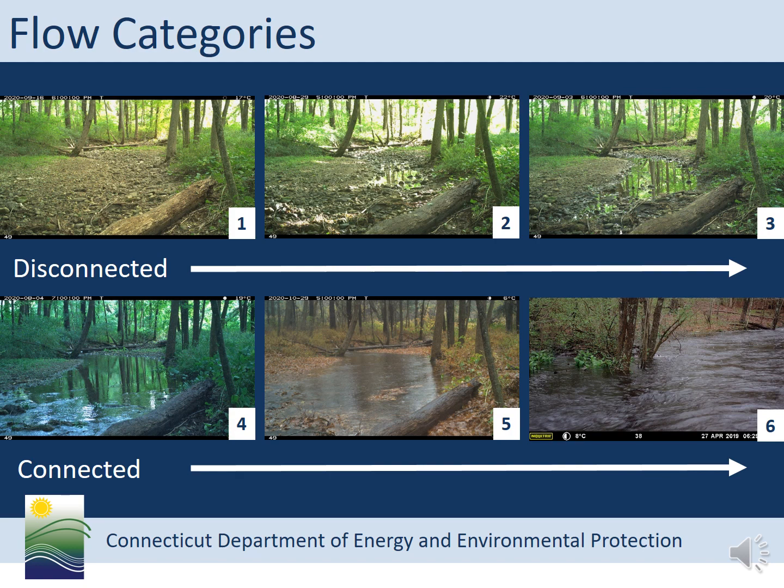We developed a six-category system to describe the variations in stream connectivity observed using trail camera images. Category one is completely dry. Category two has some pools of standing water, but no flow. Category three has minimal flow in which some pools and riffles are disconnected and some habitat types are not accessible. Category four has flows with well-connected pools and riffles. Category five is where the flow fills the stream channel at or just below bankfull discharge. And category six is when flows are above bankfull discharge and into the floodplain. Once we download the pictures from the field, we assign each picture one of these categories.